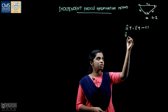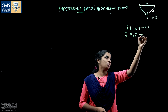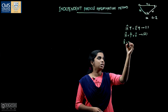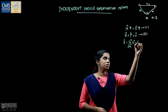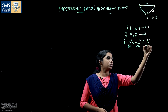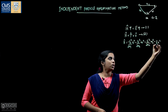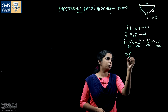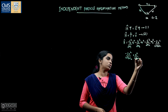The Hamiltonian H is the total energy operator, so we write it as the sum of kinetic energy and potential energy operators. The full expression is: H = −(ħ²/2m)∇² − (ħ²/2mₑ)∇₁² − (ħ²/2mₑ)∇₂² − Ze²/(4πε₀r₁) − Ze²/(4πε₀r₂) + e²/(4πε₀r₁₂).